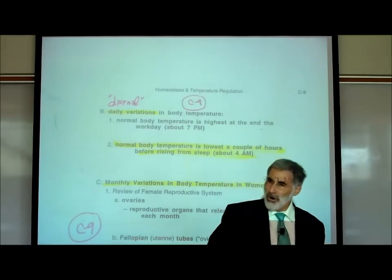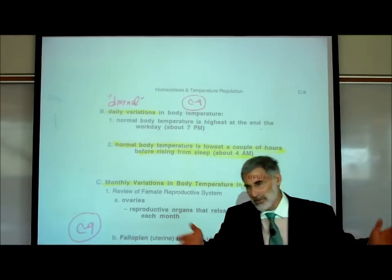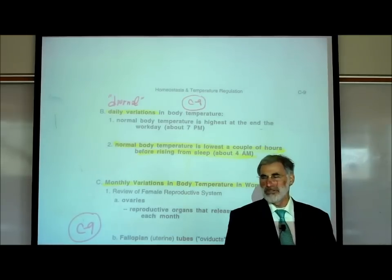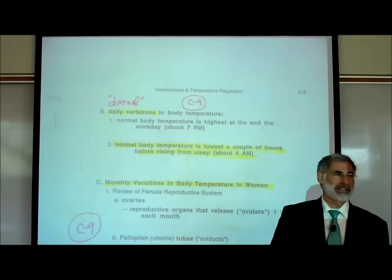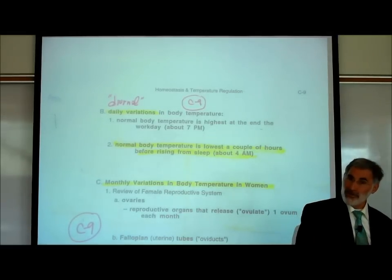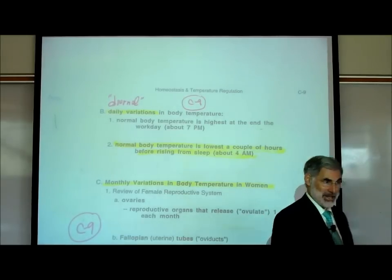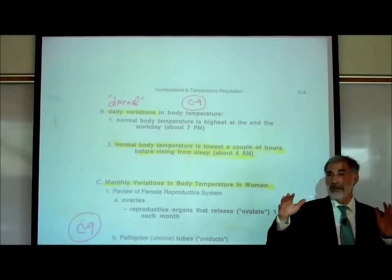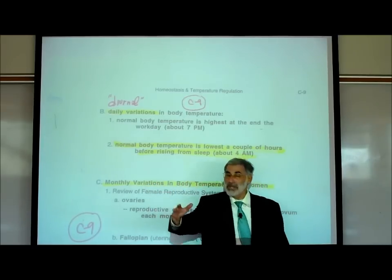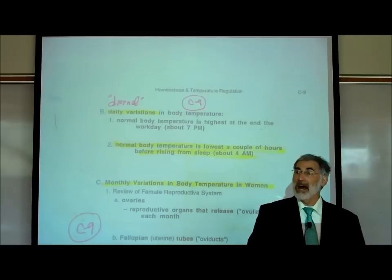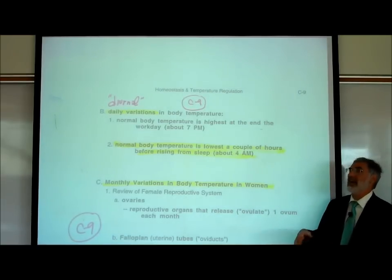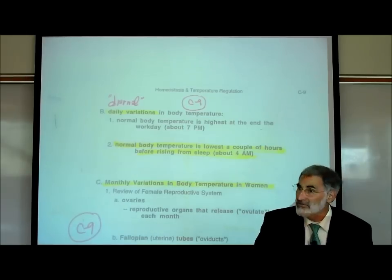When we get home, sit down, make dinner, and start to relax — maybe open up our physiology book — we start to get sleepy. As we relax, our metabolic rate starts to slow down, heat production decreases, and our body temperature starts to go down. As we fall asleep, our metabolic rate continues to slow, and our body temperature continues to drop, becoming lowest at about 4 or 5 in the morning.